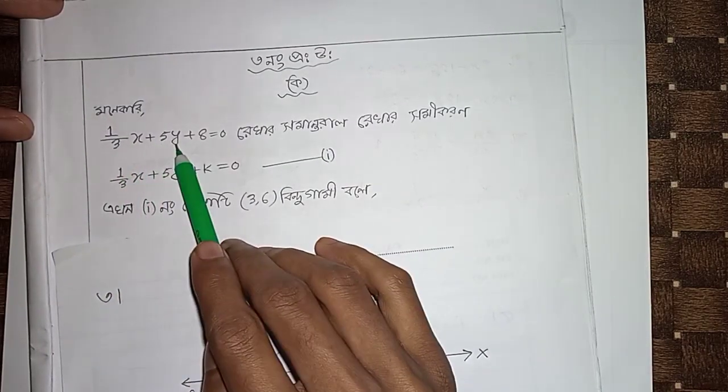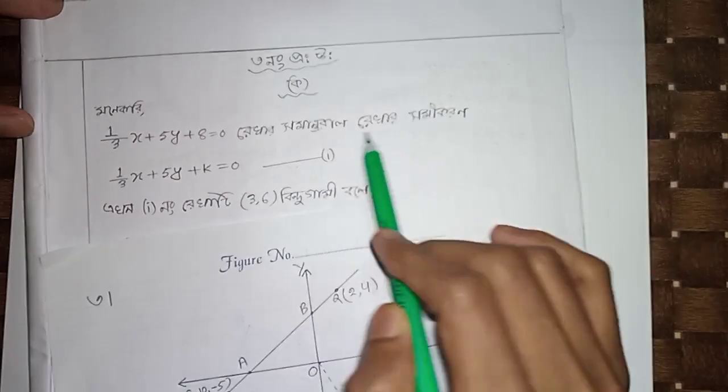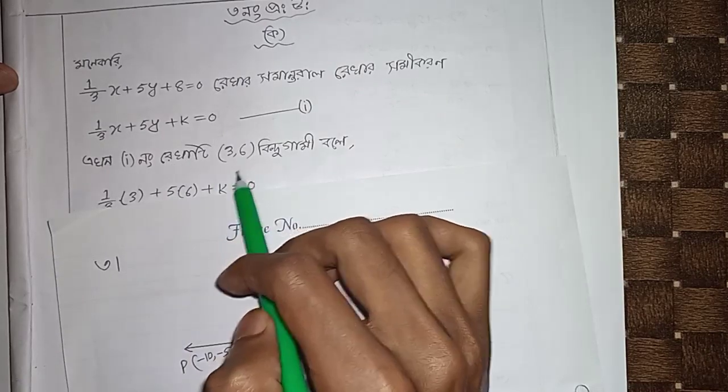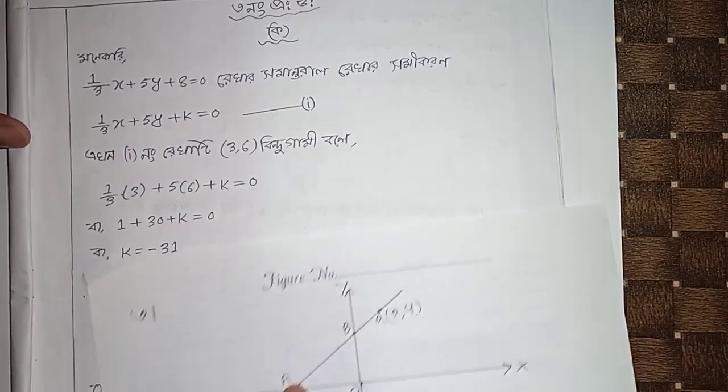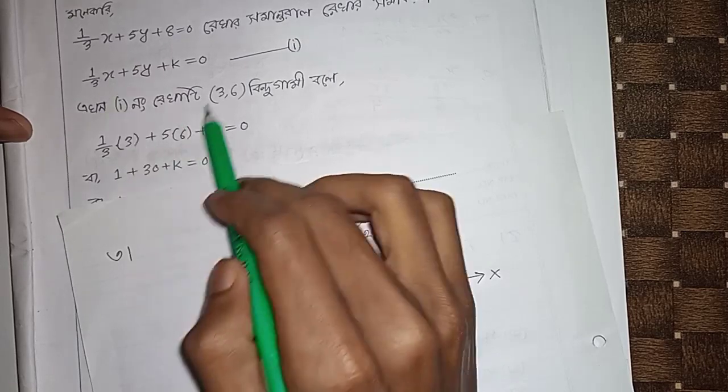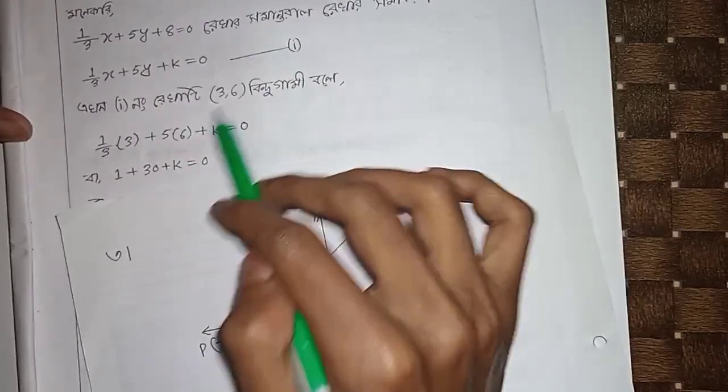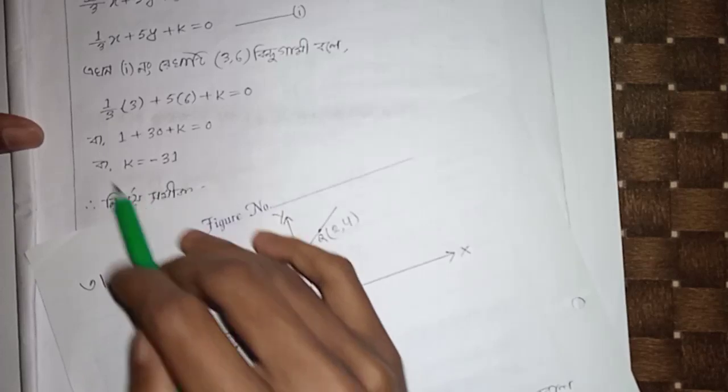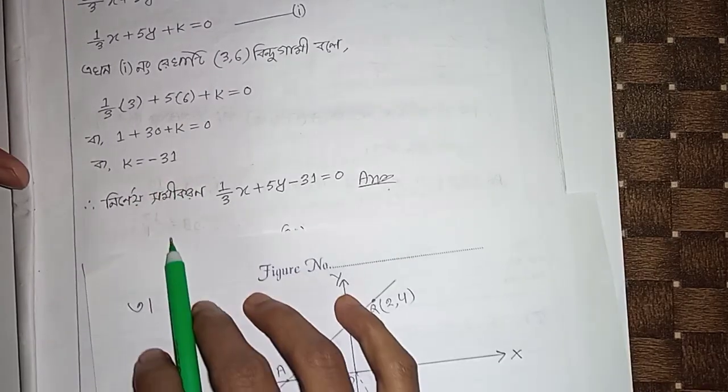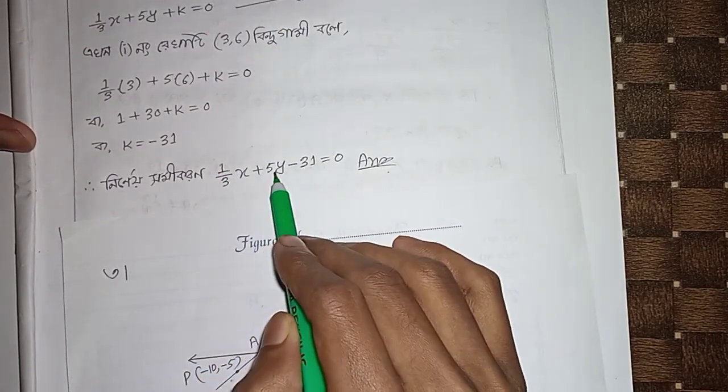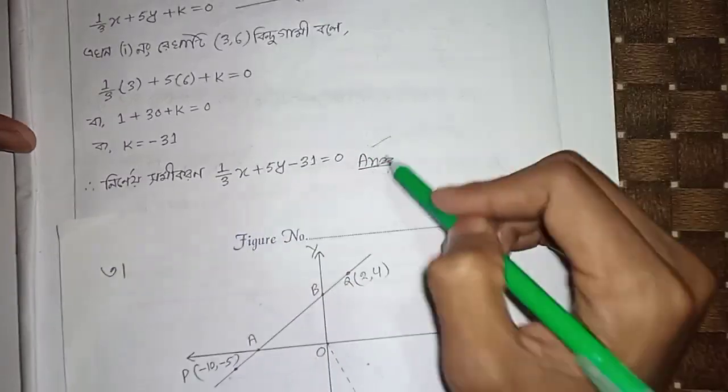1/3 x plus 5y plus 8 equal to 0. Record some on troll record some. 1/3 x plus 5y plus k equal to 0. 1/3 x plus 5y plus 6 plus k equal to 0. Three times 1 over 5, 6 plus k equal to 0, so k equal to minus 31. So k is 1/3 x plus 5y minus 31 equal to 0. This is another answer.